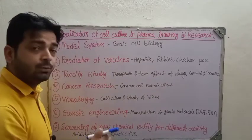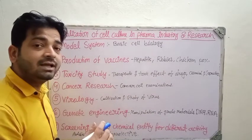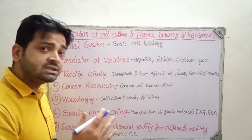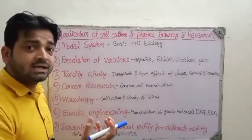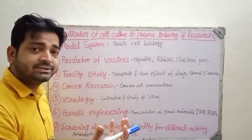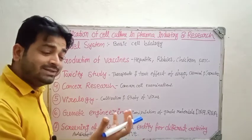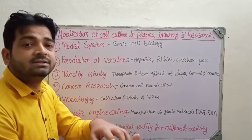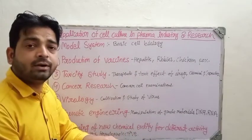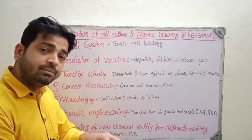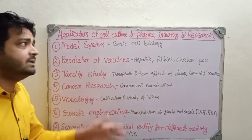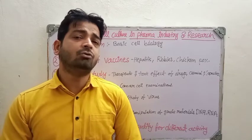Screening of new chemical entities for different activities — like anti-diabetic and hepatoprotective activity — can be done without needing to use or kill animals. For anti-diabetic activity, we isolate pancreatic beta cells from the animal body and culture them in the laboratory to test new chemical entities. For hepatoprotective activity, we obtain hepatocytes or liver cells, culture them with a suitable nutrient medium and environment, and check the new chemical entity for its hepatoprotective effect.